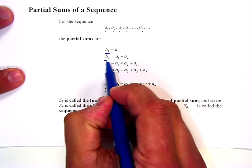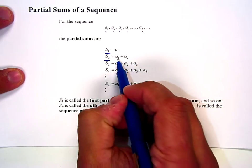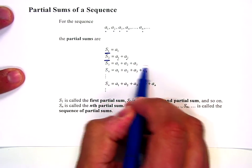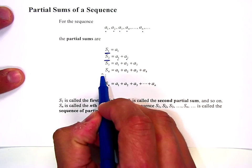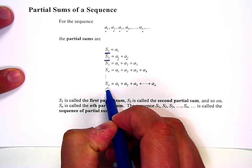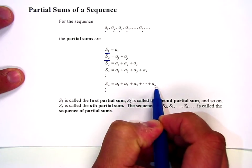The partial sum of 2, or the second partial sum, is a sub 1 plus a sub 2. Third partial sum is the sum of the first three terms. Fourth partial sum, sum of the first four terms.